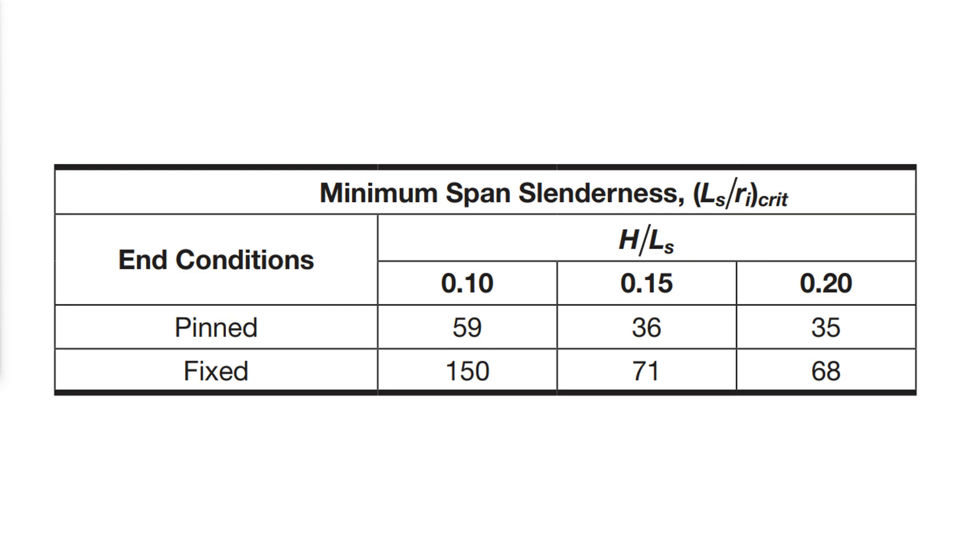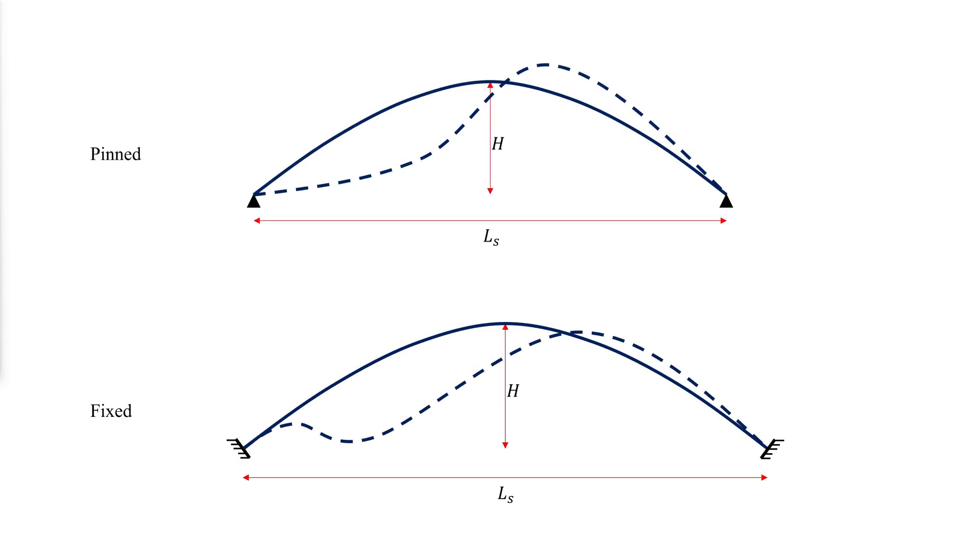Generally, snap-through buckling is not critical for arcs with rigid supports and rise-to-span ratios greater than 0.2. When snap-through buckling is prevented, arcs buckle in the asymmetric modes for pinned and fixed arcs. These buckling modes are less sensitive to second-order effects and support spreading.